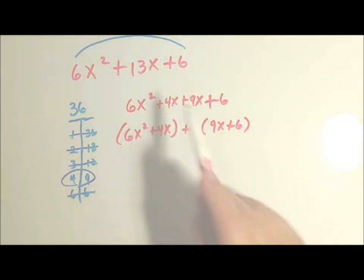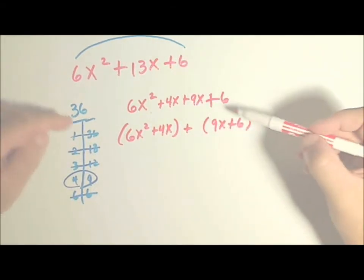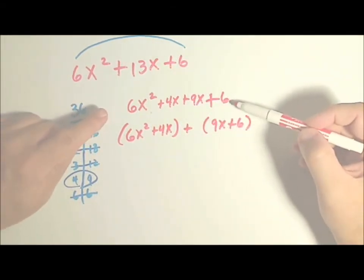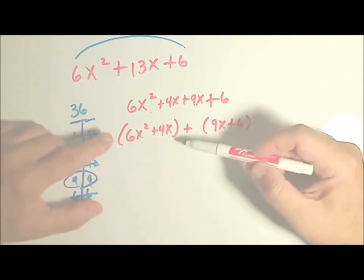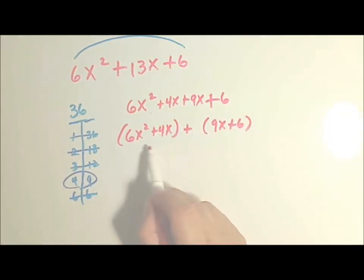And that's still this. We have not done anything to the original trinomial except broken it into four parts and then broken those four parts into groups of two. Now the first thing is I look at this and I go, what can I factor out?